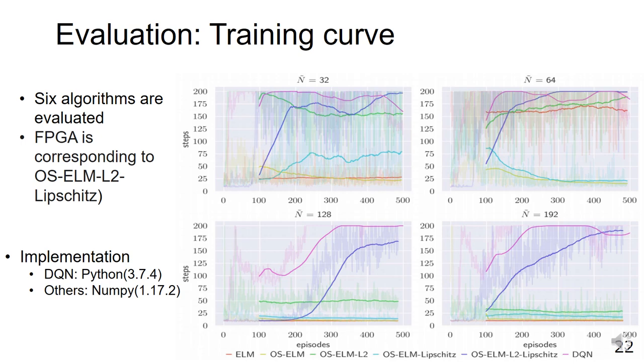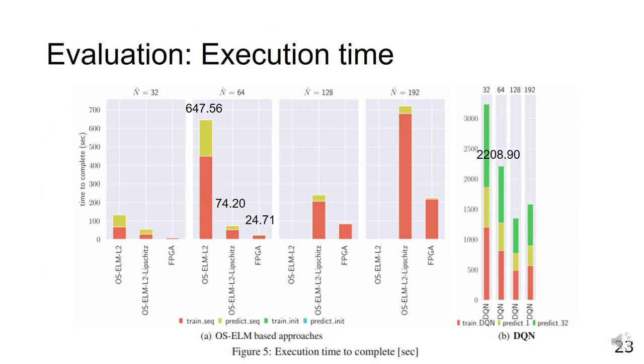These graphs show the execution time required to complete the CartPole task when N is 32, 64, 128, and 192. In this evaluation, we do not evaluate designs that failed to complete the task for 50,000 consecutive episodes or designs with low stability.